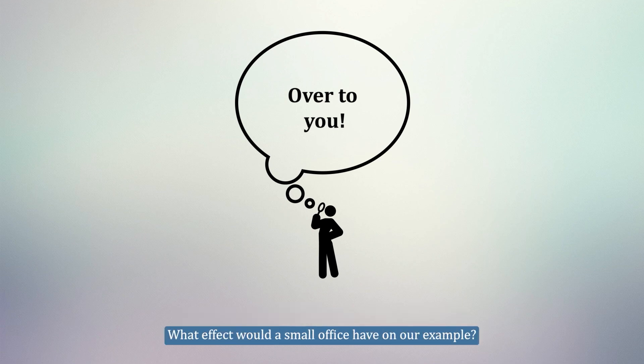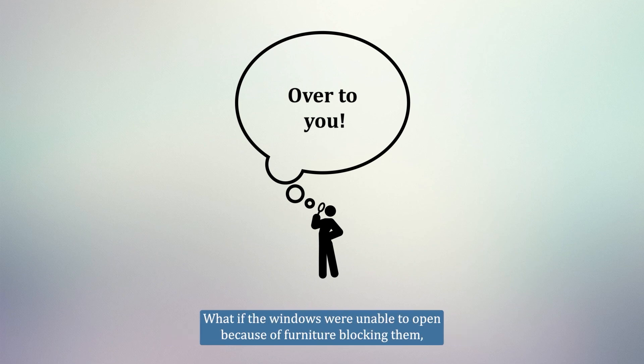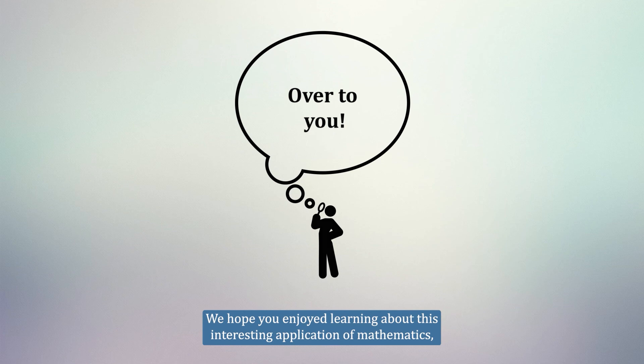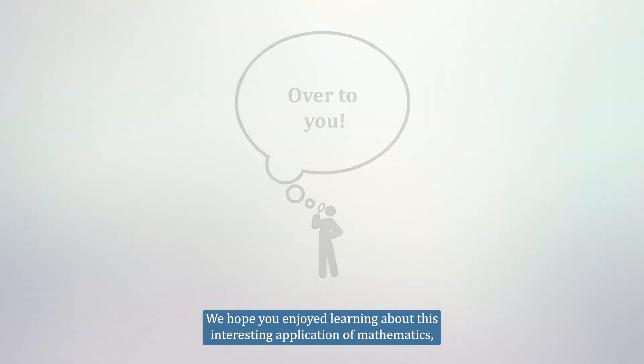You might also want to use this model to think about how certain factors affect CO2 levels. For example, what effect would a smaller office have on our example? What about if there was a third occupant? What if the windows were unable to open because of furniture blocking them, or because they are in an inaccessible location? We hope you enjoyed learning about this interesting application of mathematics, and thank you for watching.